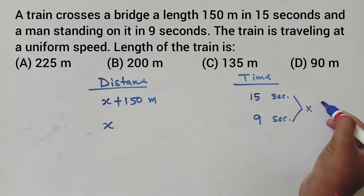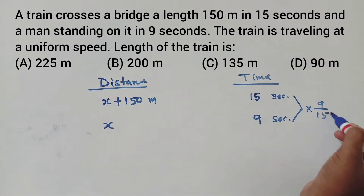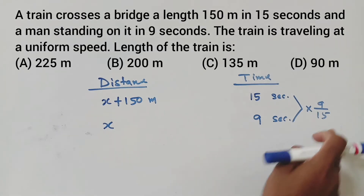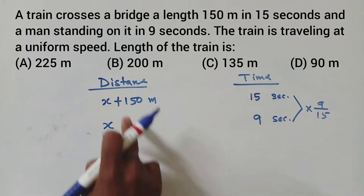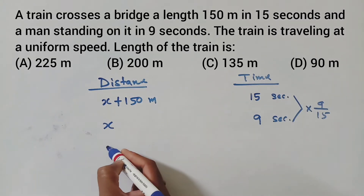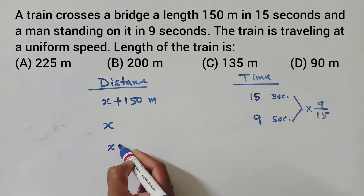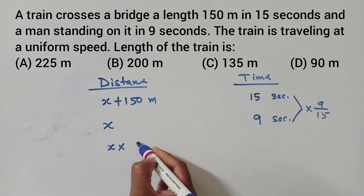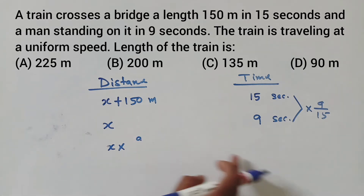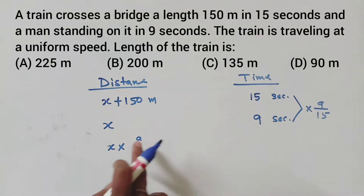The distance is proportional. Using the ratio, 9 by 15. So I am setting up: X raised to 9 by 15. The ratio of times gives us 9 by 15.